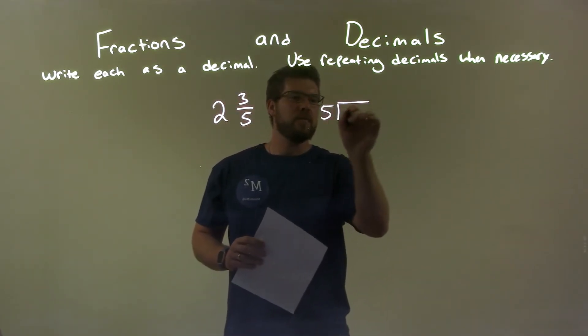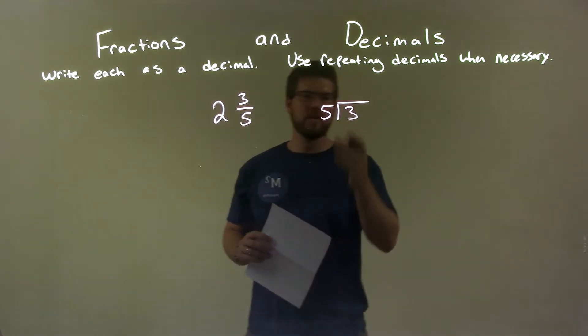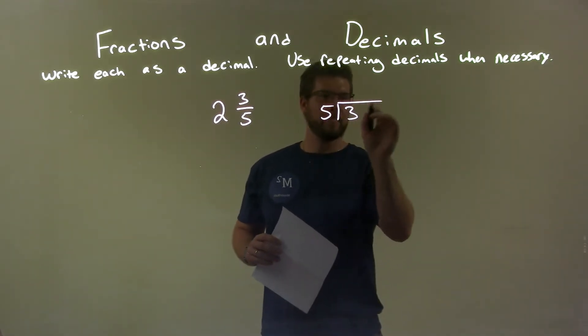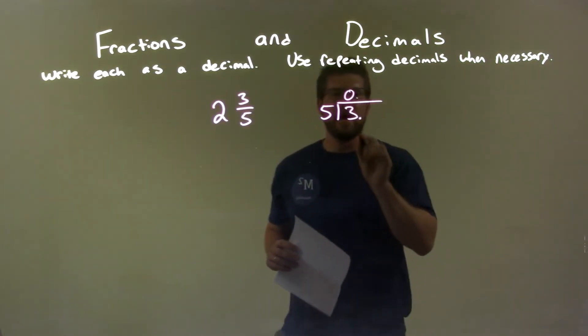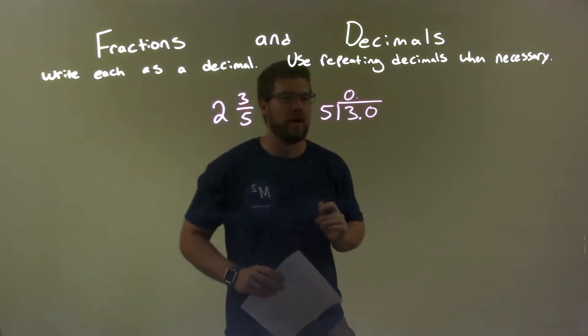So 5 goes into 3. Well, 5 doesn't go into 3, right? So we're going to add a decimal point there, 0 up top, and we add a 0 right here.